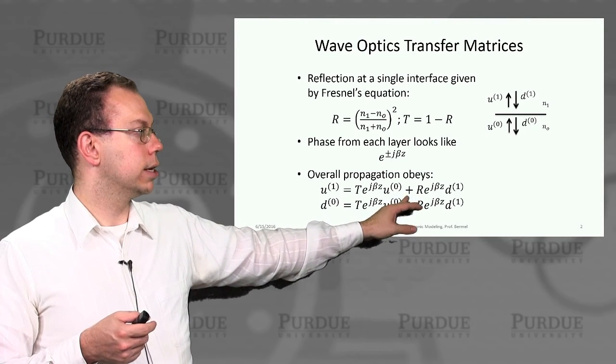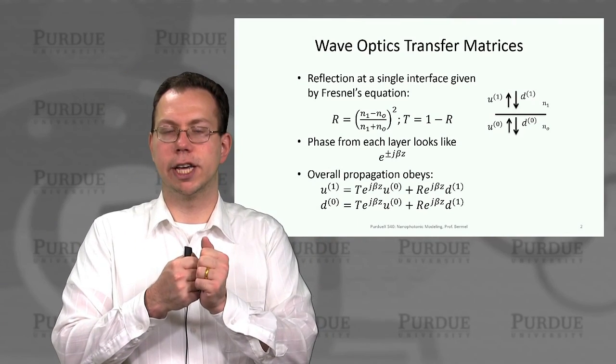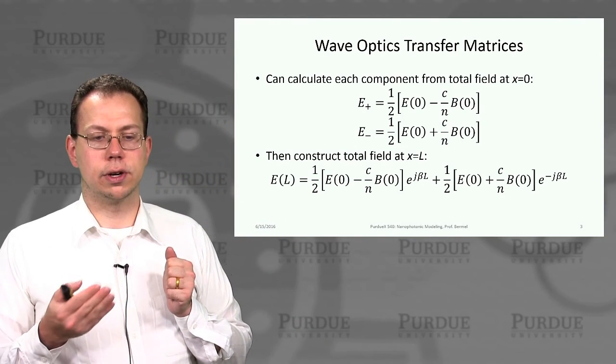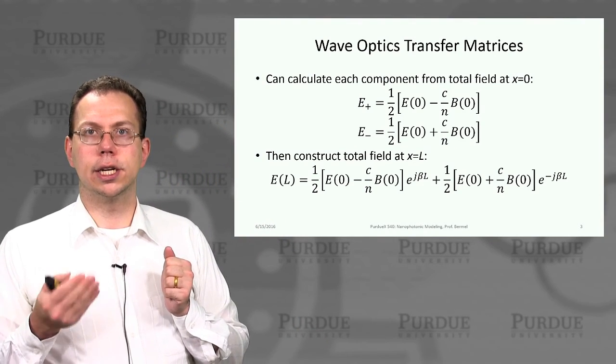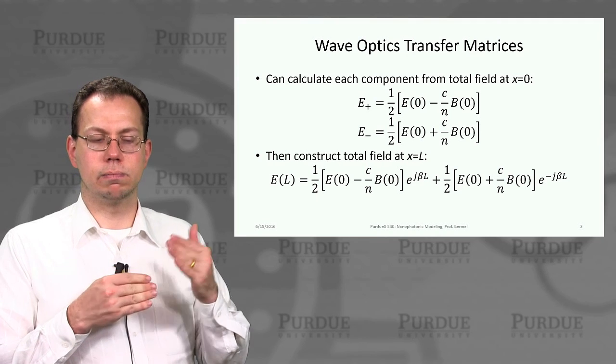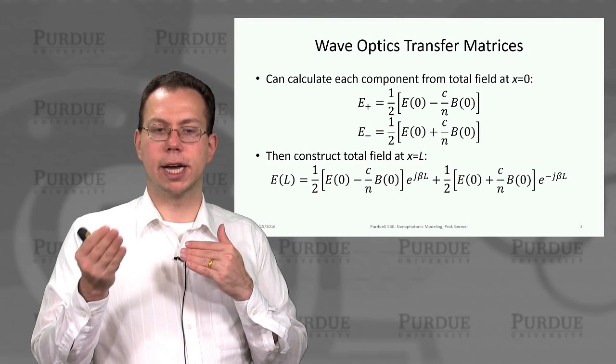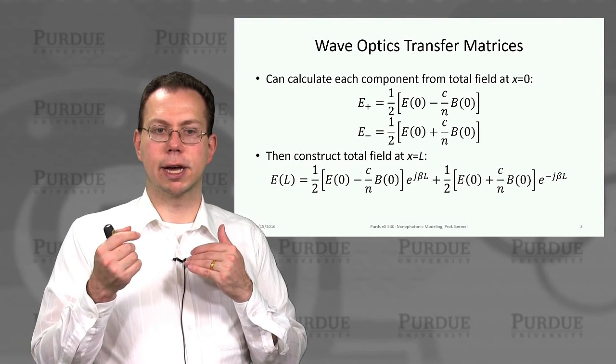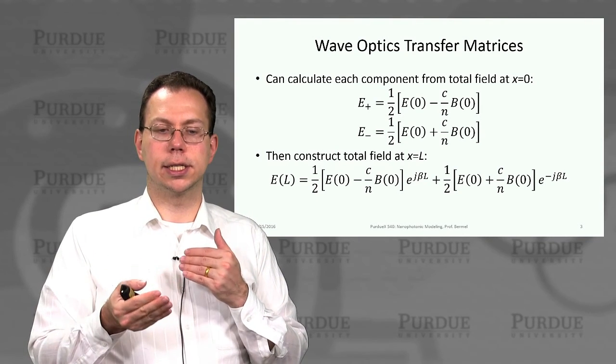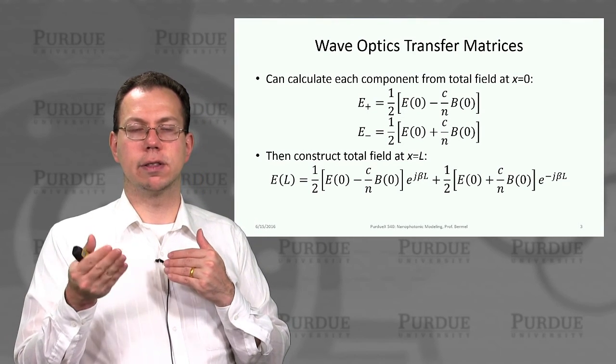So here's an example using d1 and u0 as inputs. So basically everything that's going towards the interface then creates everything going away from it. And so we can use that to calculate each component of the total field at that interface x equals 0. We can get a forward propagating wave which goes like the electric field minus a factor c over n times the magnetic field at that point. And then the backward propagating wave, e minus, is the same thing except there's the sign change, there's a plus instead of minus in front of the b term.